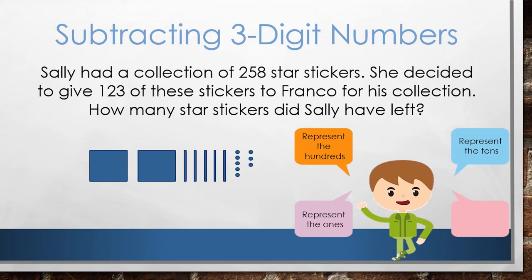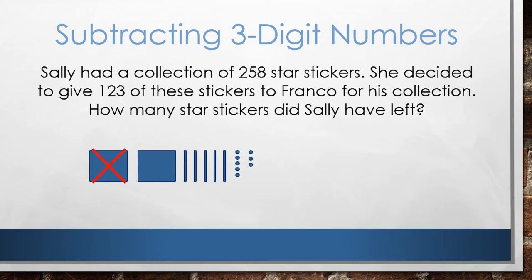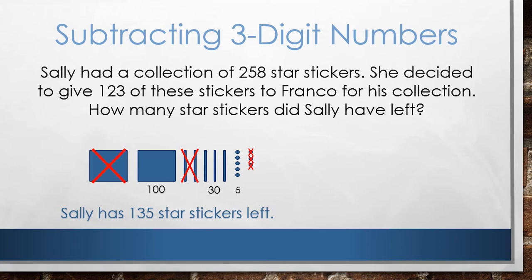Since Sally is giving 123 of her stickers away to Franco, we will be subtracting. How can we model subtraction using place value notation? We have already represented the total number of stickers, 258. So we can show how to take away 123 by crossing out 100. Then we can cross out two tens, which is 20. Then we can cross out three ones. When we look at our place value models now, we can see that there is 100, three tens, and five ones left. So Sally has 135 star stickers left.